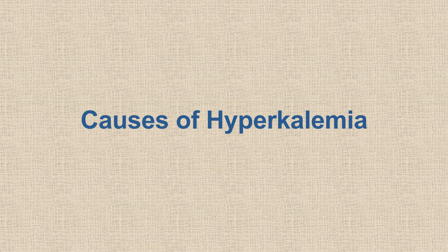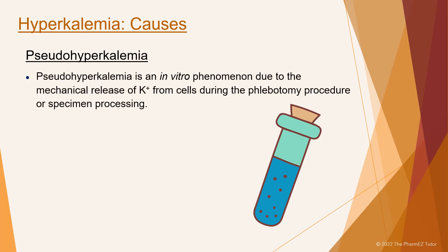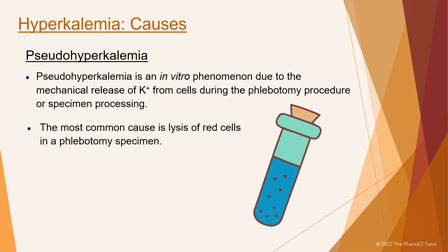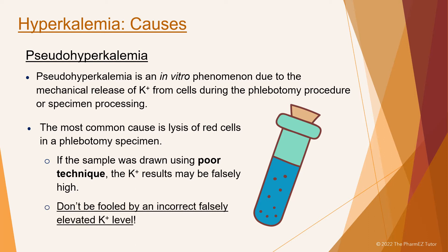Let's go over the causes of hyperkalemia. Pseudohyperkalemia is an in vitro phenomenon due to the mechanical release of potassium from cells during the phlebotomy procedure or specimen processing. The most common cause is lysis of red blood cells in a phlebotomy specimen. If the sample was drawn using poor technique, the potassium results may be falsely high. Don't be fooled by an incorrect, falsely elevated potassium level.